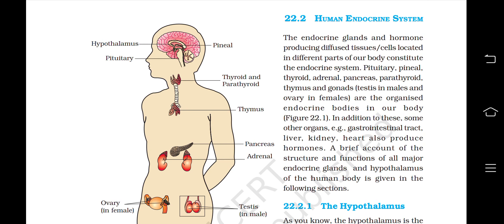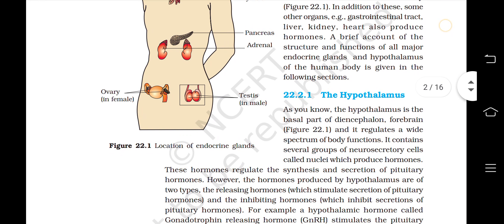The human endocrine system: the endocrine glands and hormone-producing diffuse tissues or cells located in different parts of our body constitute the endocrine system. Pituitary, pineal, thyroid, adrenal, pancreas, parathyroid, thymus and gonads — testes in males and ovary in females — are organized endocrine bodies in our body. In addition to these, some other organs such as the gastrointestinal tract, liver, kidney, and heart also produce hormones. A brief account of the structure and functions of all major endocrine glands and the hypothalamus of the human body is given in the following sections.